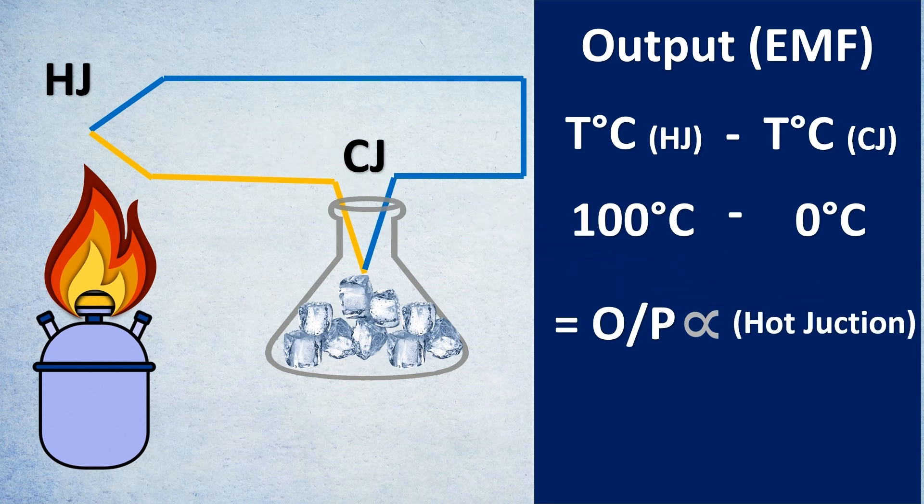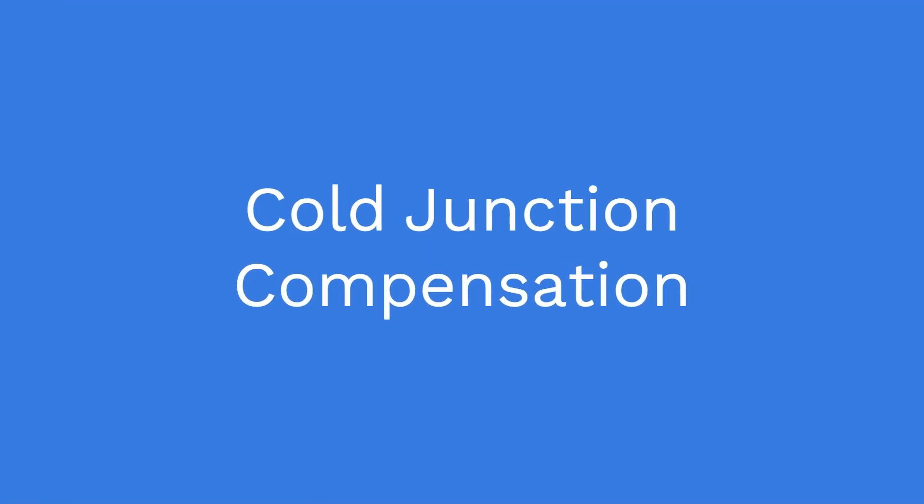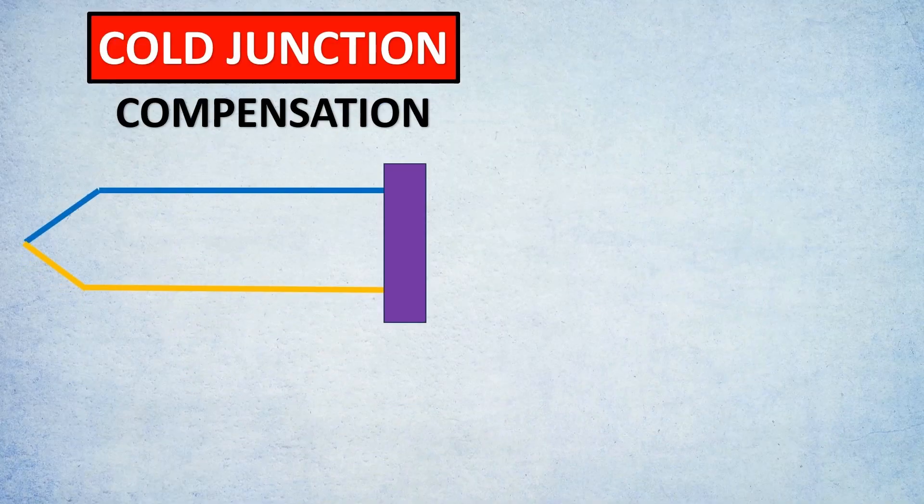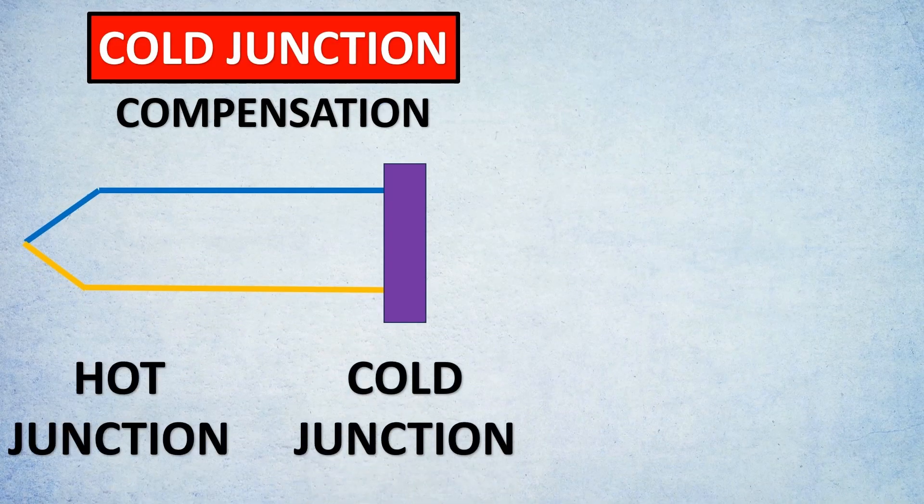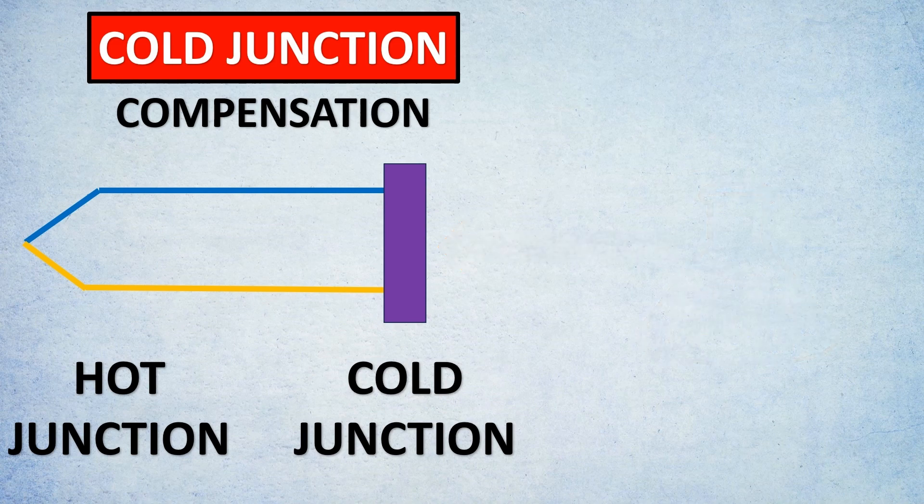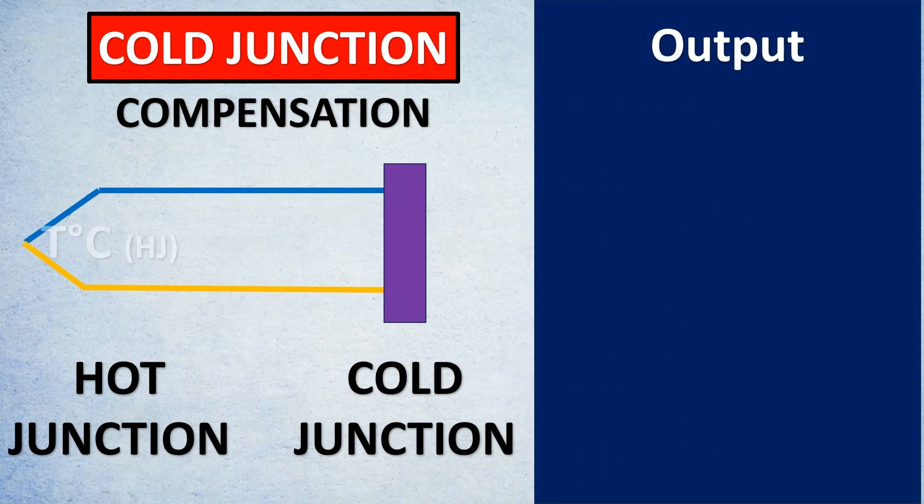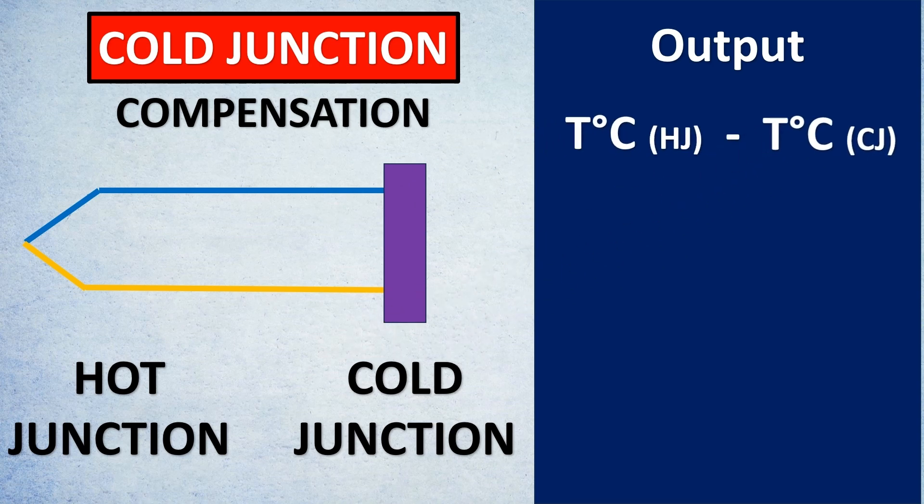But the question arises, what about in industries? So the answer to that is cold junction compensation. So if you look at cold junction compensation, basically imagine that I have two junctions which is the hot junction and cold junction. Now instead of having the ice bath here, what do we do is first we find out the output. What was the output? It is the temperature at the hot junction minus the temperature at the cold junction. The EMF that is generated.